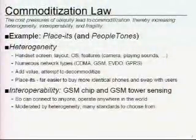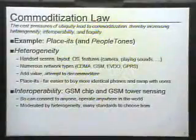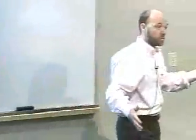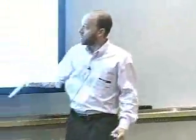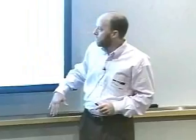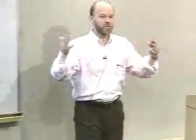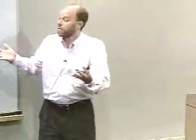Interoperability is actually a real positive. Where there's all this innovation, there's less innovation in the network — anyone has to be able to call anyone. We were able to take people's chips out of their GSM phones and put them in our phones to do our experiment, and GSM tower sensing is something that would work anywhere in the world — pretty much. However, this interoperability is moderated by heterogeneity. For example, if I have a CDMA phone that runs C# and a GSM phone that runs C#, I can't compare their cell tower signatures to determine proximity because they're in different networks. The interoperability is a very narrow interface.